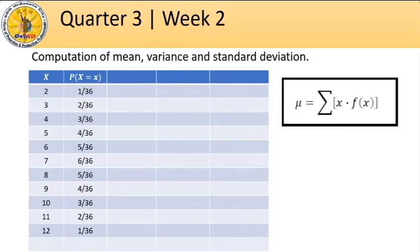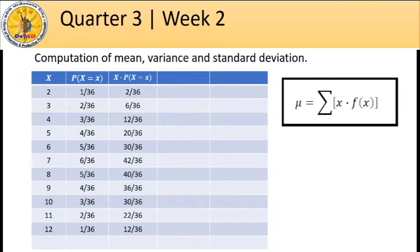First, let us compute for the mean. We know that mean is the average of all the possible outcomes. Since we are dealing with weighted means, it is important to note that we first need to multiply our x's with its probability. Let us add one column to make our computation in proper order. Our third column would be our x times the probabilities of our x. On the first row, we have 2 times 1 over 36 equals 2 over 36. We continue this process up to the last row.